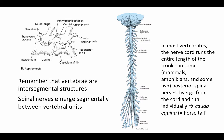In most vertebrates, the nerve cord runs the entire length of the vertebral column as a single unit. But in some — such as mammals, amphibians, and some fish — the posterior spinal nerves diverge from the main spinal column before the end of the vertebral column, ending up as wispy strips traveling down to their particular segment before emerging. We call this wispy posterior part the cauda equina, which literally means horse's tail.